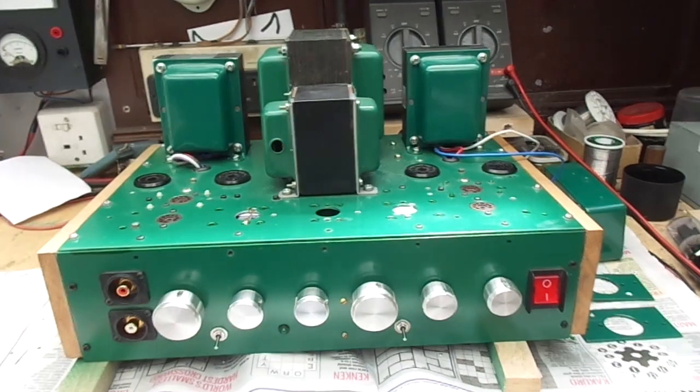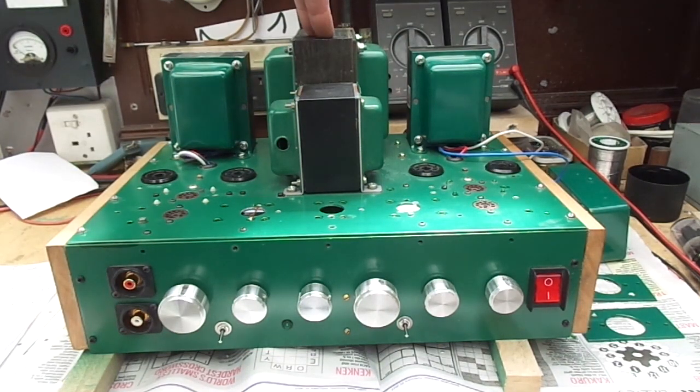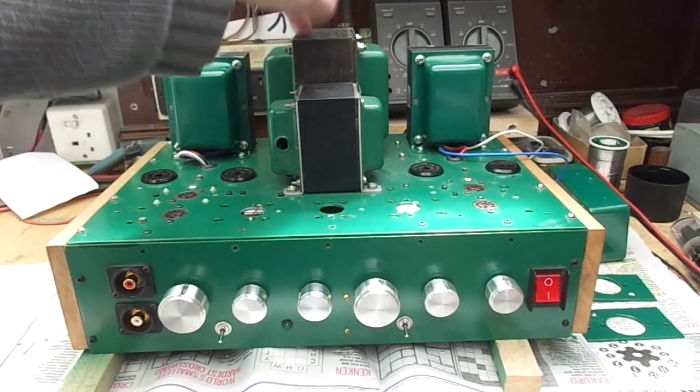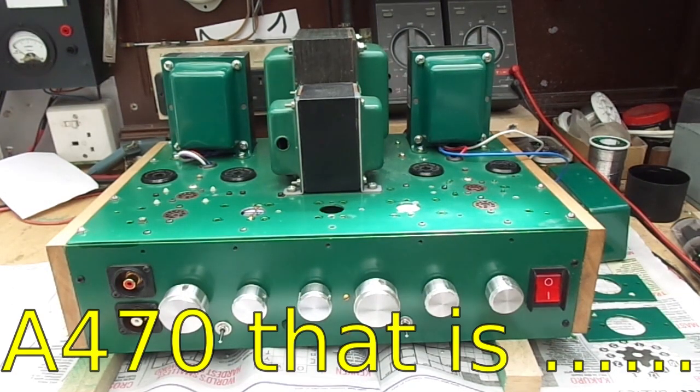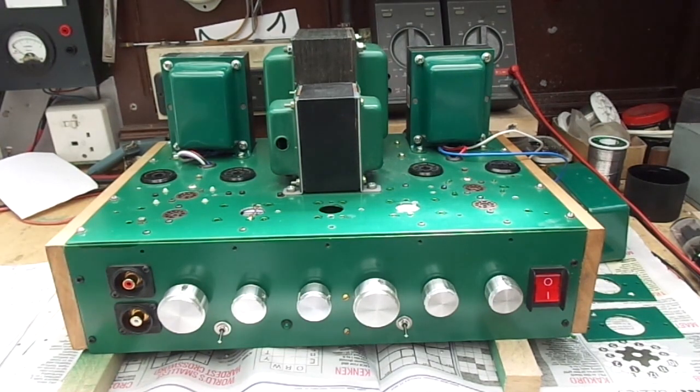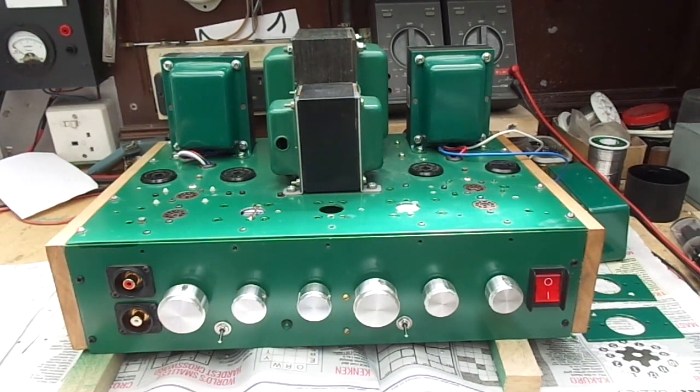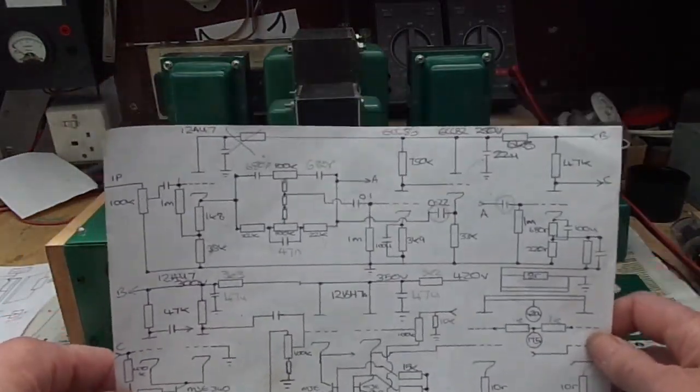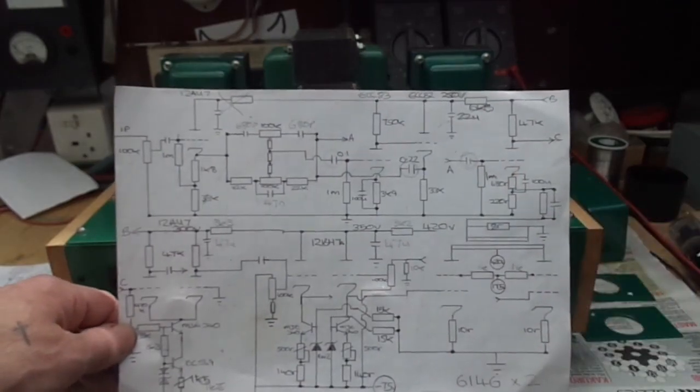For a start, I started off with an overly complex design. Originally this was a Dynaco ST70 mains transformer replica, and I had two output transformers supposedly built to the Dynaco specs, but they turned out to be rubbish. Instead of just building a Dynaco ST70 replica, I ended up building this Class AB2 amplifier with a valve tone control. As you can see, there's a hell of a lot going on, it's really busy.